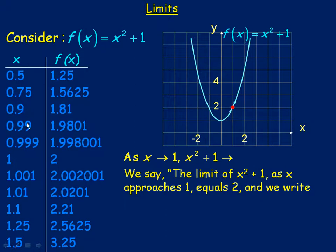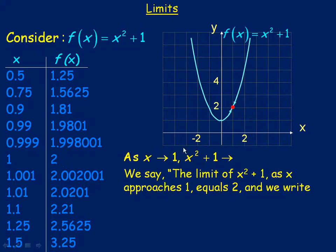Notice that x values are getting closer and closer to 1, but approaching it from the left, from below. So as you trace along the table here, it's the same as tracing along the curve — x is about 0.5. As my cursor moves, x is getting closer to 1 from the left side. As you approach 1 from the left side, the function values or y values get closer and closer to 2 — y is about 1.5, maybe 1.7, 1.8, 1.9, getting close to a value of 2.